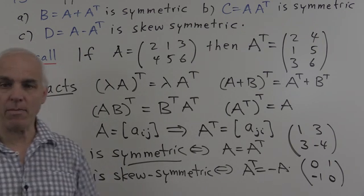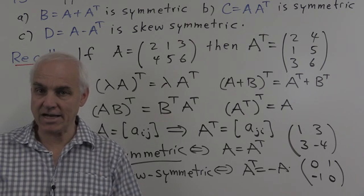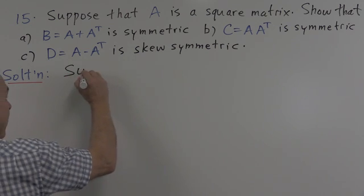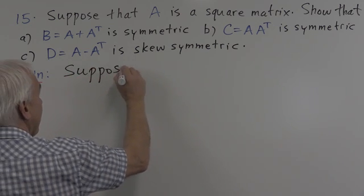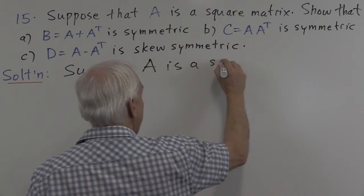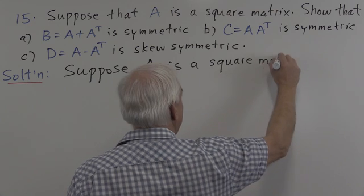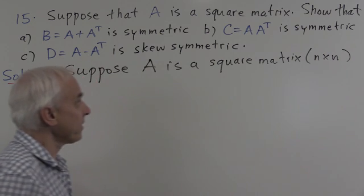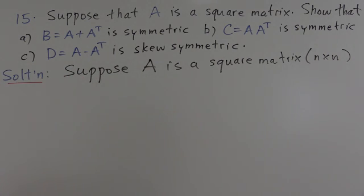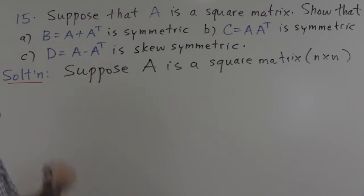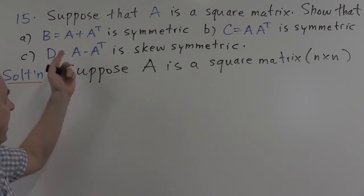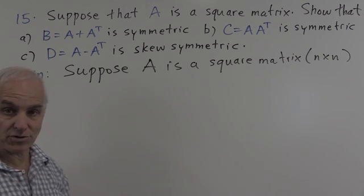Those are the basic facts about transposes and symmetric and skew-symmetric matrices. Now let's look at the problem. Suppose A is a square matrix — that means it's an n×n matrix for some n. We need that in order for these expressions to be defined: you can't add A and A transpose unless they're the same size, and if A is not square, A and A transpose will be different sizes.